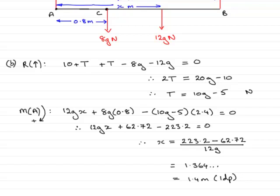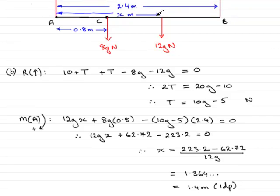So the center of mass is 1.4 meters to one decimal place from A. And that brings us to the end now of question 6.